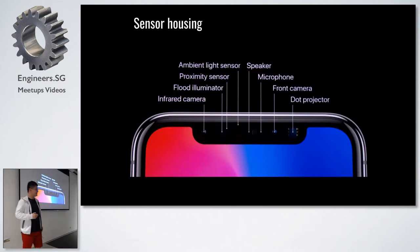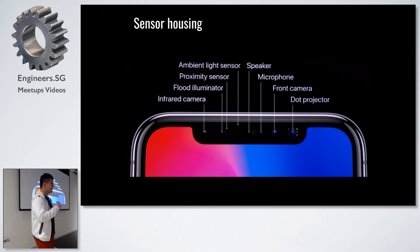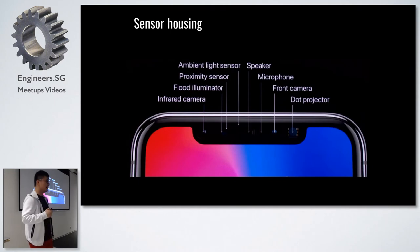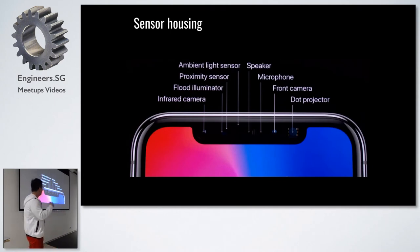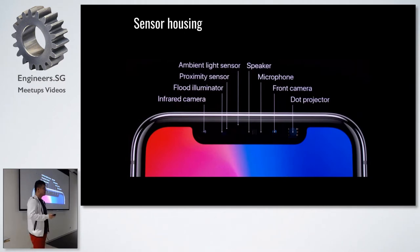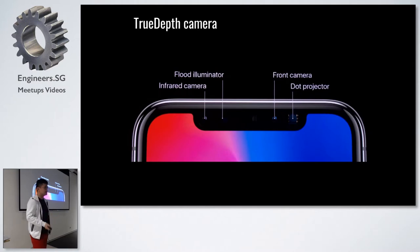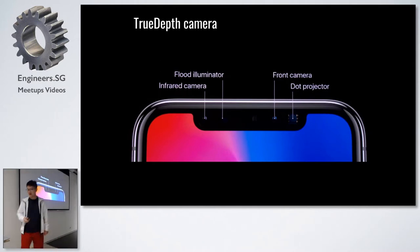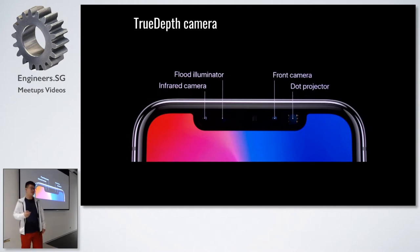We also noticed that something else is missing: a tiny little area in the top center of the screen. This is called the sensor housing. Inside it is a whole bunch of projectors, cameras, and sensors. Apple has introduced the TrueDepth camera, which is basically a projector, a front camera, an infrared camera, and a flood illuminator.